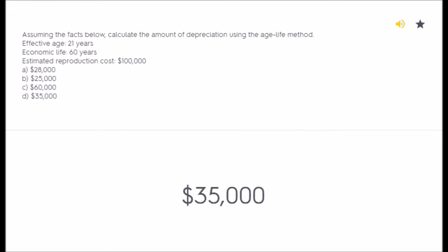...using the cost approach. Reproduction cost $100,000. A) $28,000, B) $25,000, C) $60,000, D) $35,000.